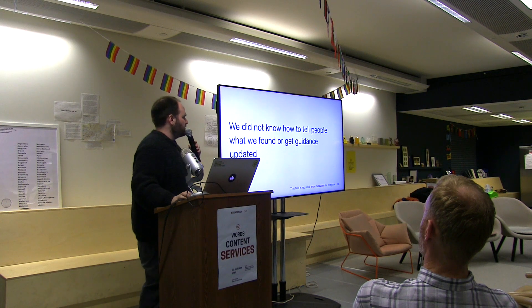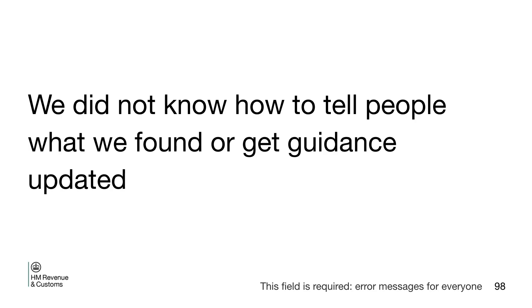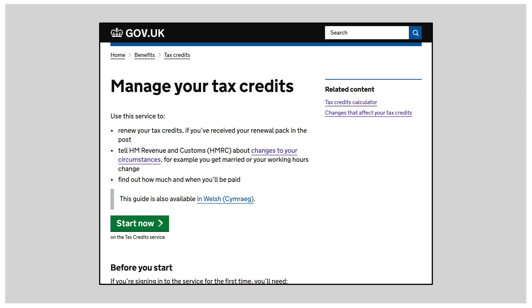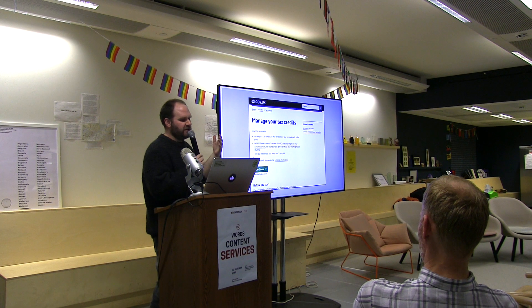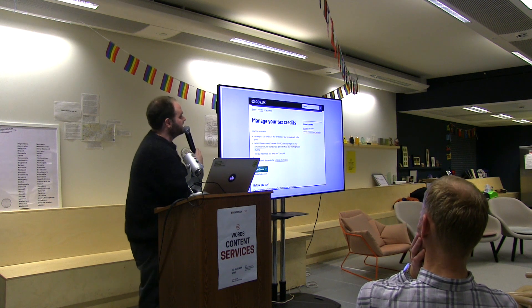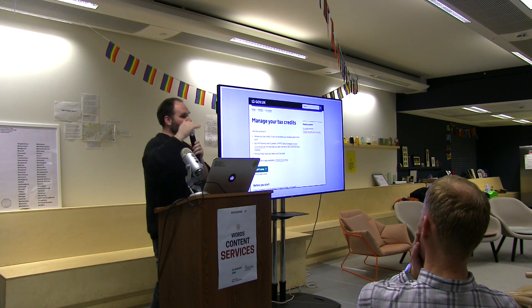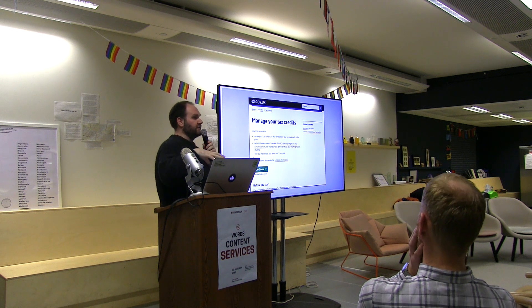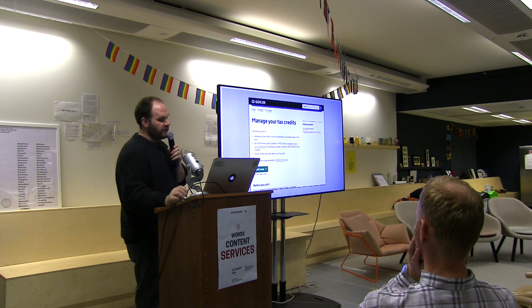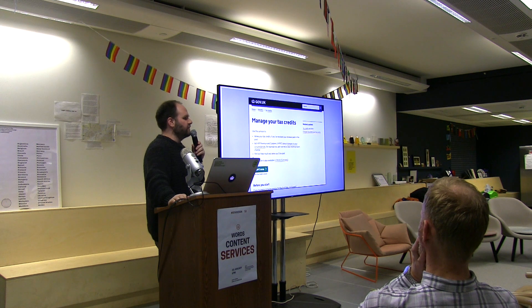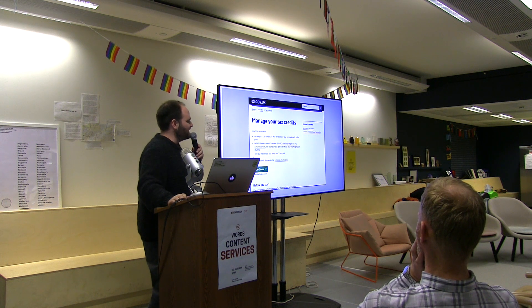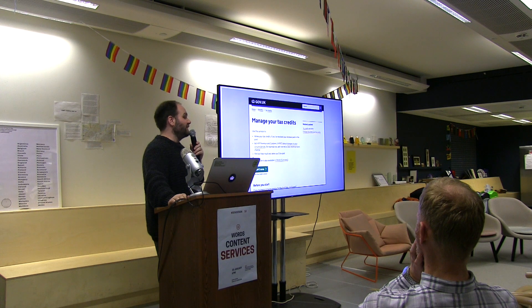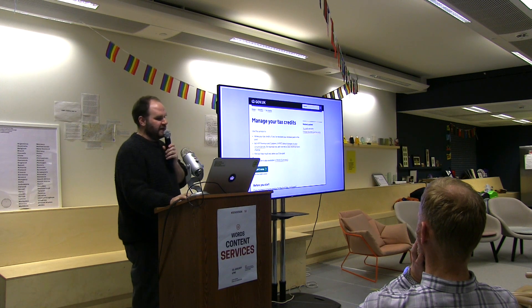The biggest thing we found was we didn't know how to pass the word out across government, because it was quite hard to do that in 2015. In early 2016 I got moved on to tax credits, which is an incredibly lengthy service that lets you do all manner of things. When I was in the service in mid 2017, if you included all of the branch logic through the journeys and all of the waypoints that would kick people out, there were 150 separate journeys in the service — and nine of them were just like changing your kid's name. So it's quite complicated.